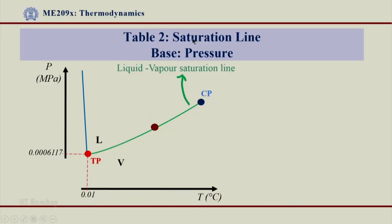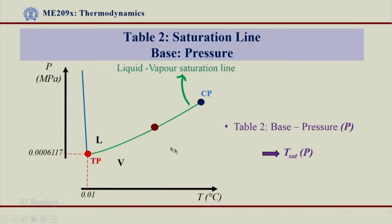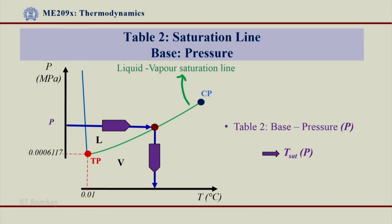Let us now come to Table 2—saturation line with pressure as the base. Again, we have the same P-T diagram with the LV saturation line running from the triple point to the critical point. We locate a point on this line for our thermodynamic system. Now, instead of temperature, pressure is the base. I locate the given pressure, go horizontally, find the intersecting point with the saturation line, and corresponding to that I get the temperature.